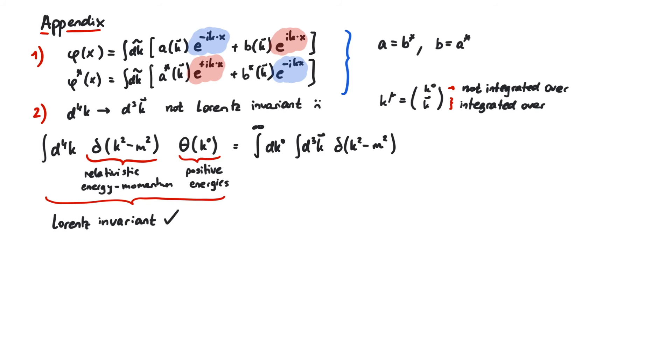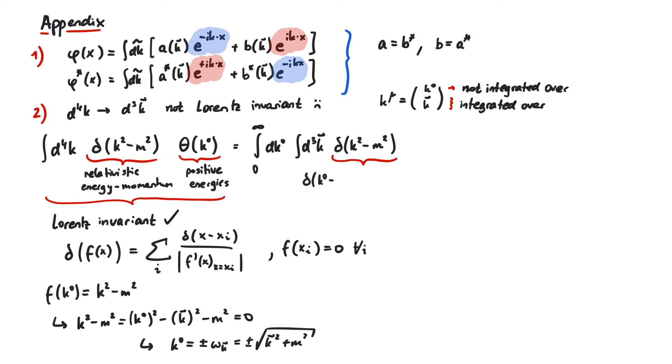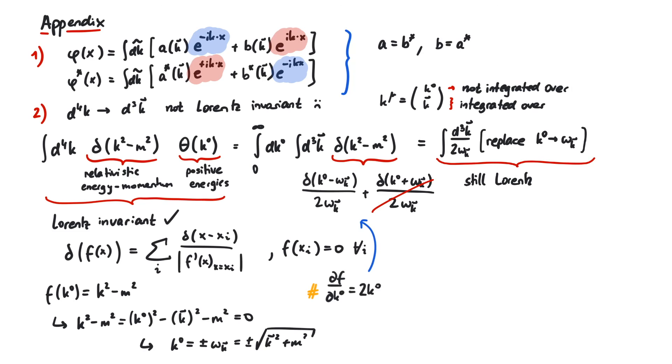Now we separate the d4k into dk0 from minus infinity to plus infinity and the d3k. The heavy side function changes the integration region of dk0. And the delta function can be evaluated like this. We use a nice formula to simplify a function inside a delta function. Xi are those values where the function is zero, and in the denominator there is the derivative of the function. This means we have to find the zeros of k squared minus m squared. It is not surprising that this gives us the expression for omega again. We can split up the delta function into two delta functions and immediately see that one of them cannot be fulfilled, since both k0 and omega are greater than zero. It is conventional to throw a 2pi to the power 3 in there and call everything dk tilde. And after the dk0 integration, every k0 will now be replaced by omega.